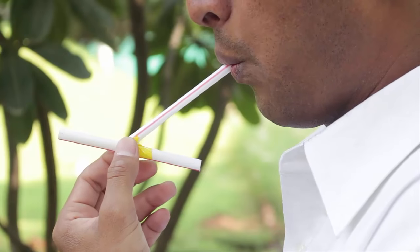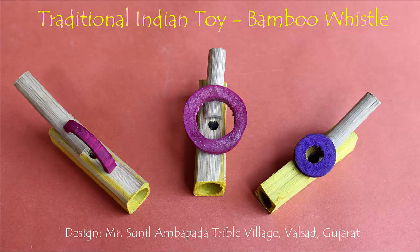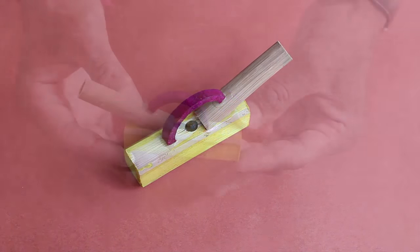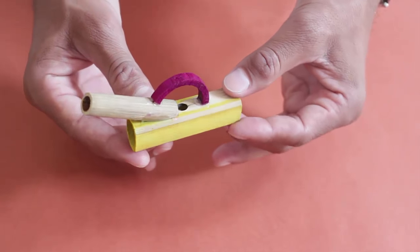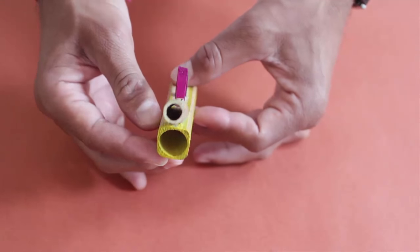As you blow, air strikes the circular hole and begins to vibrate, making a shrill whistle sound. Now what you see is a traditional bamboo whistle. By blowing from the thin end, you can once again produce a very nice whistling sound.